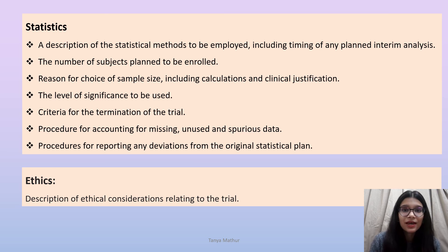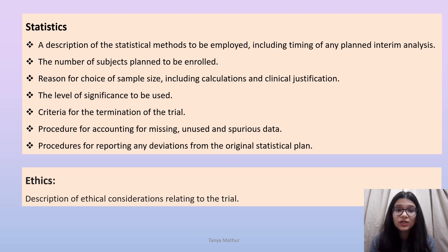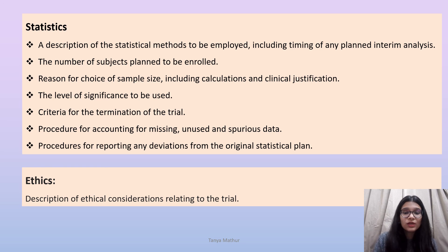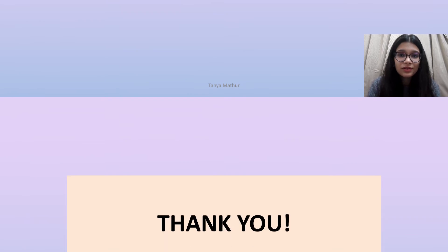Regarding statistics, certain statistical studies need to be conducted alongside clinical trials, and these must be included in the report. This covers a description of the statistical methods to be employed including the timing of any planned interim analysis, the number of subjects planned to be enrolled, reasons for the choice of sample size including calculations and clinical justification, the level of significance to be used, criteria for termination of the trial, procedures for accounting for missing, unused and spurious data, and procedures for reporting any deviations from the original statistical plan. Certain ethical considerations also need to be included as a description. Thank you.